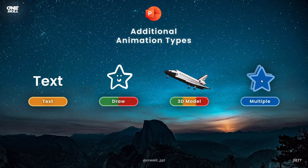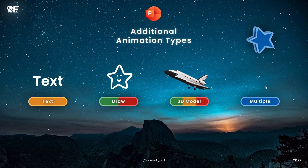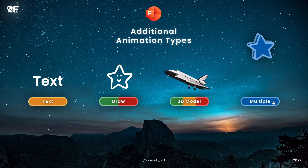Finally, you can add multiple animations to the same object and this way create custom animations. For example, this little blue star has two animations applied: a motion path line animation and at the same time a spin animation.